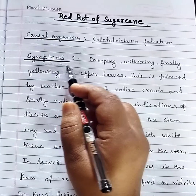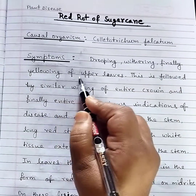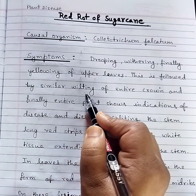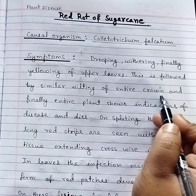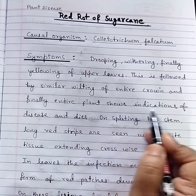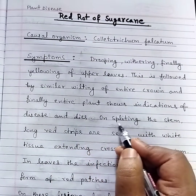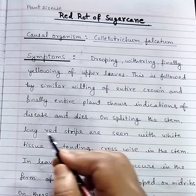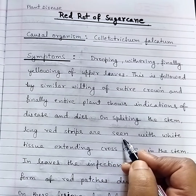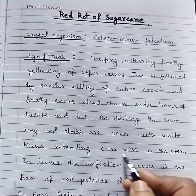Symptoms include drooping, wilting, and finally yellowing of the upper leaves. This is followed by similar wilting of the entire crown, and finally the entire plant shows indications of disease and dies.